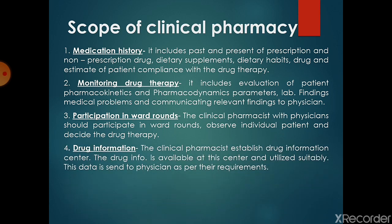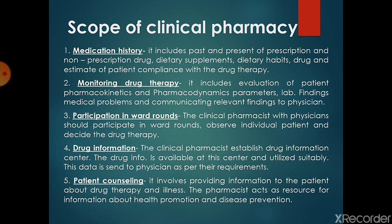Fourth, drug information — the clinical pharmacist should establish drug information centers in the pharmacy department. The drug information is available at the center and utilized suitably, and this data is sent to the physician as per their requirements. Fifth, patient counseling — it involves providing information to the patient about drug therapy and illnesses. The pharmacist acts as a resource for information about health promotion and disease prevention.